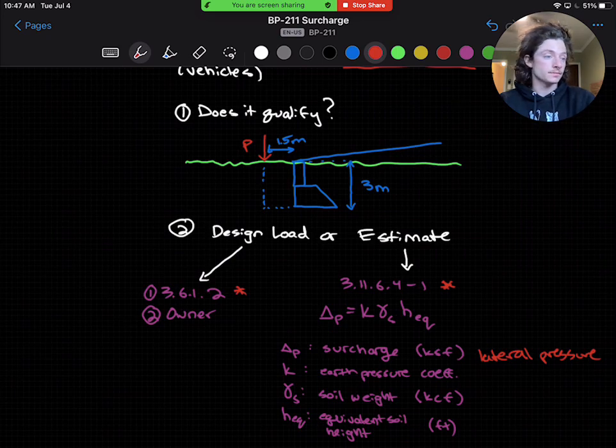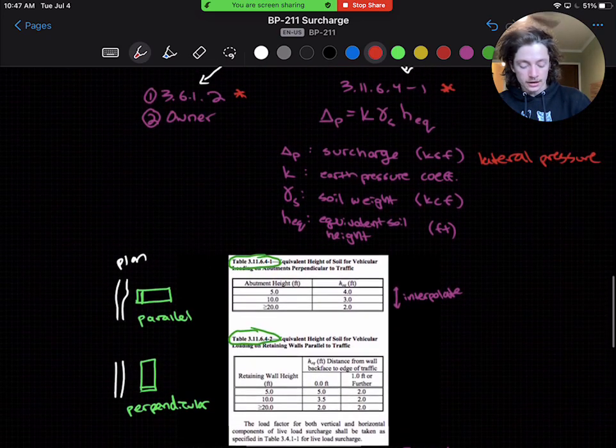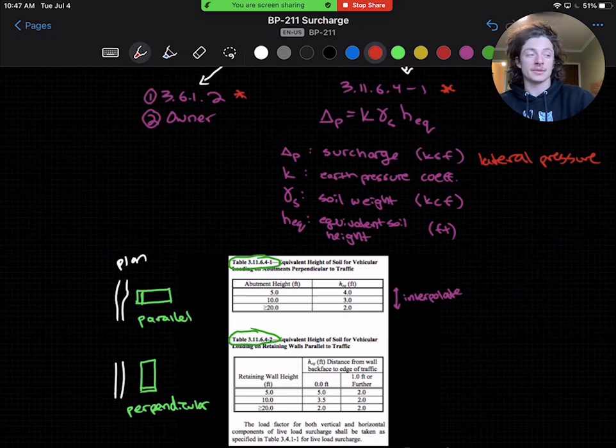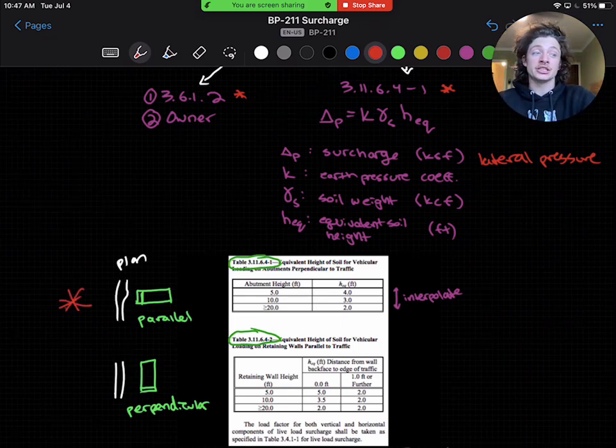That we'll read off some charts. The equivalent soil height we can find in Table 3.11.6.4-1 and Table 3.11.6.4-2. Notice that we should be using the table for retaining walls parallel to traffic, because this is the correct orientation for our abutment.